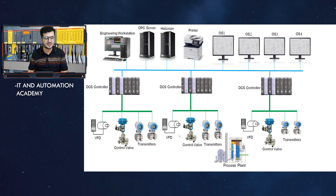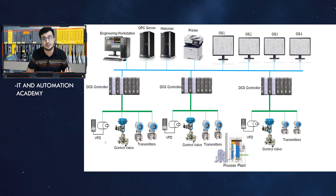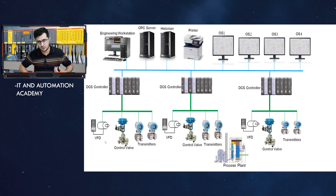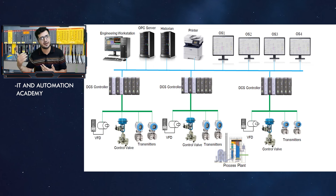So first of all, let's talk about instrumentation at the field level. At the field level, there are many instruments — VFDs, different control valves, different process conditions, and different process values. These instruments are placed to sense and measure what's going on in the process — temperature, level, pressure — and to control final control elements.